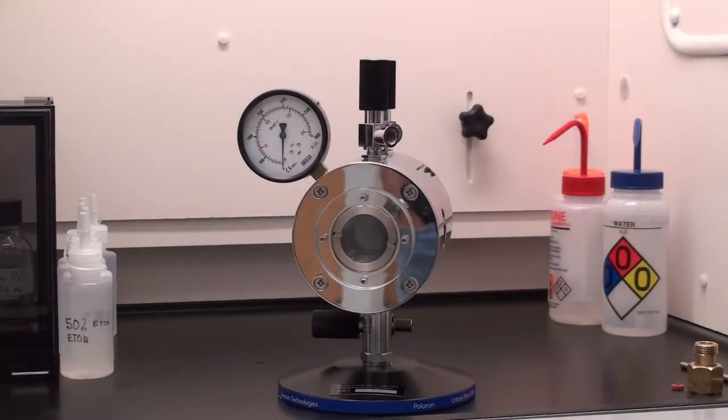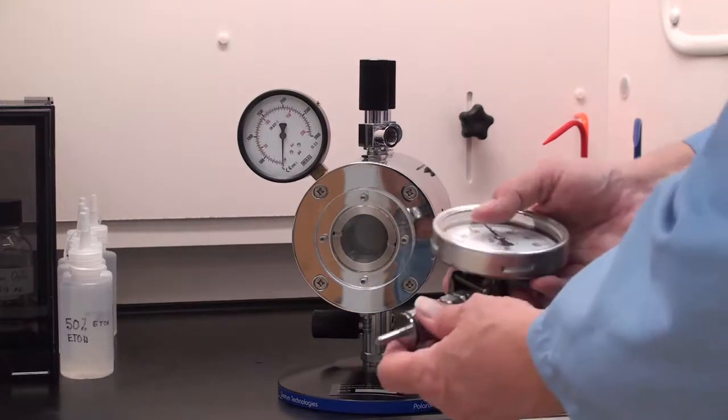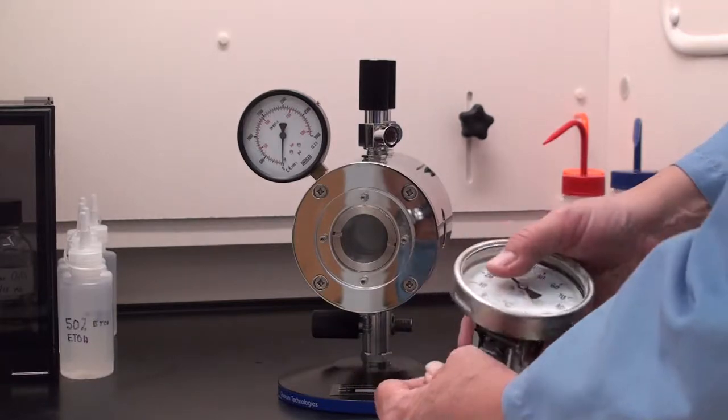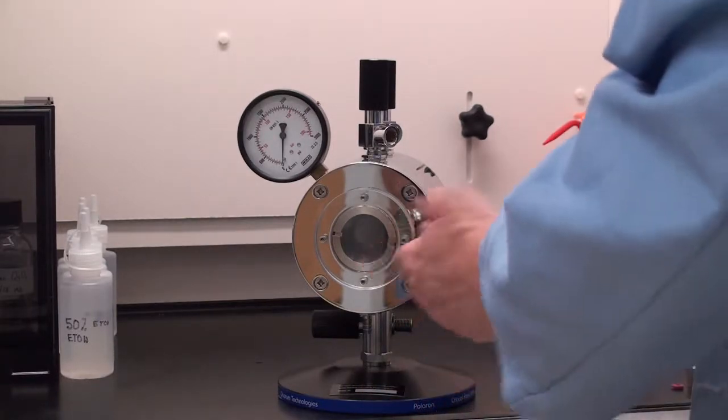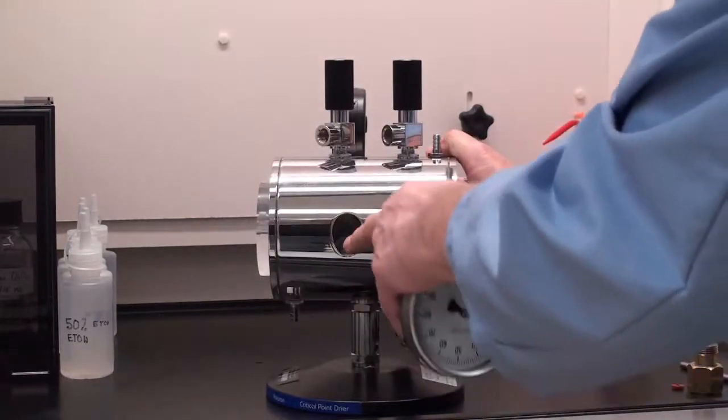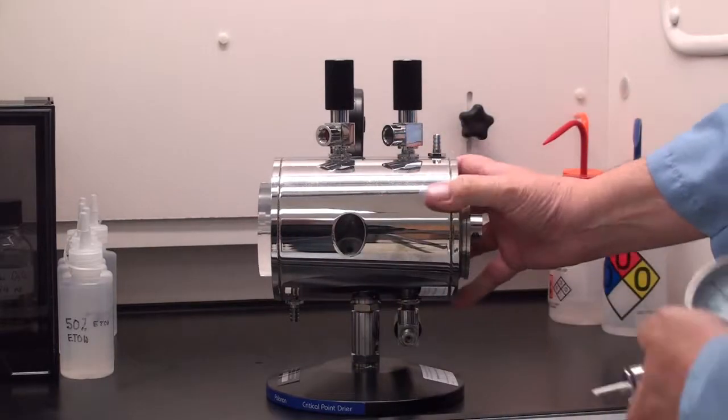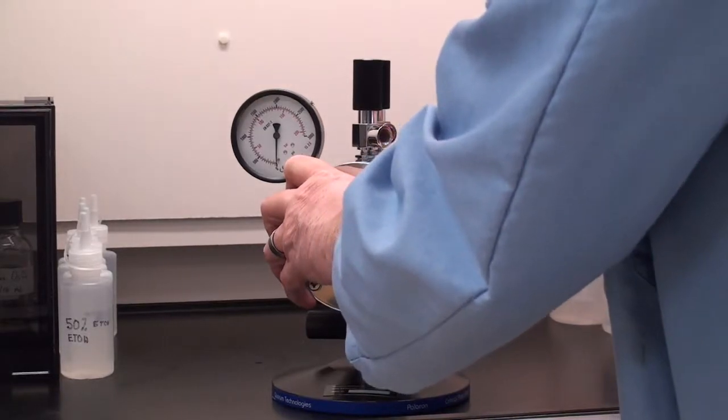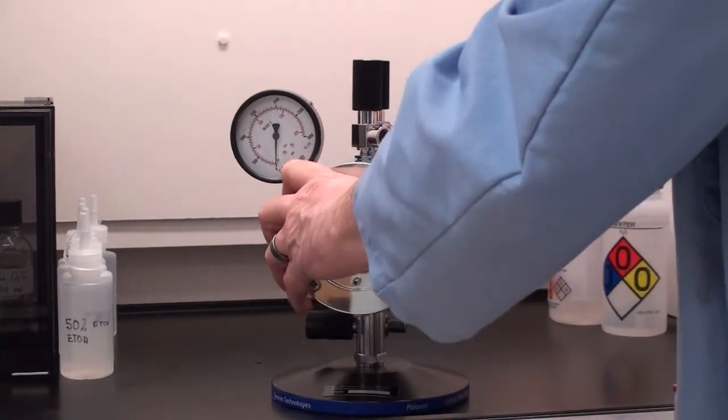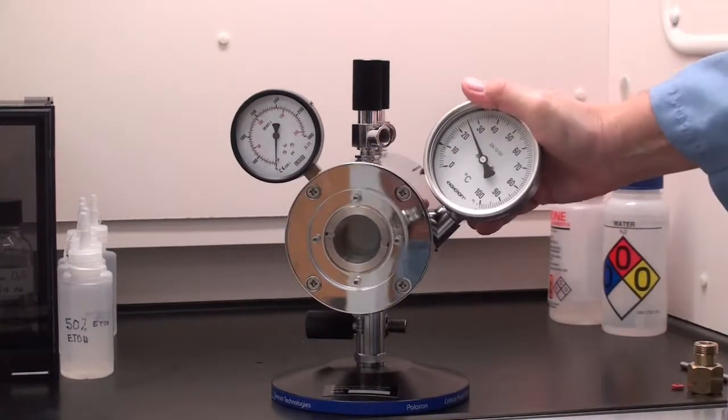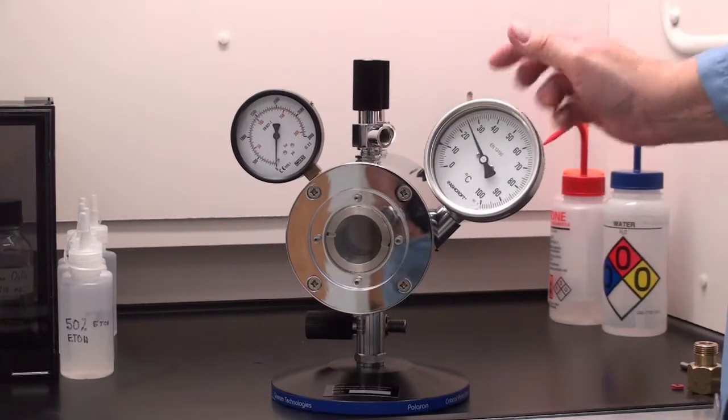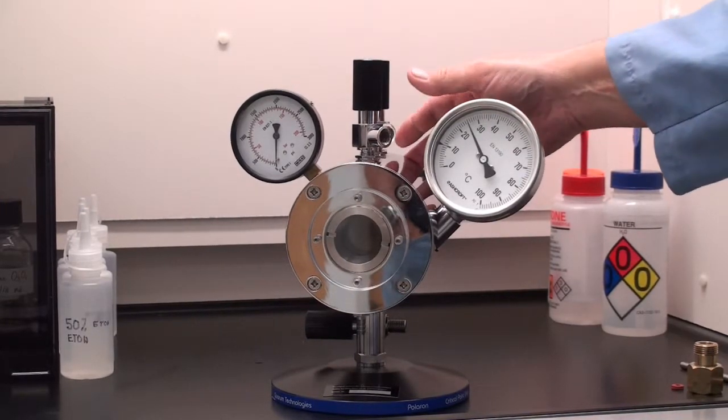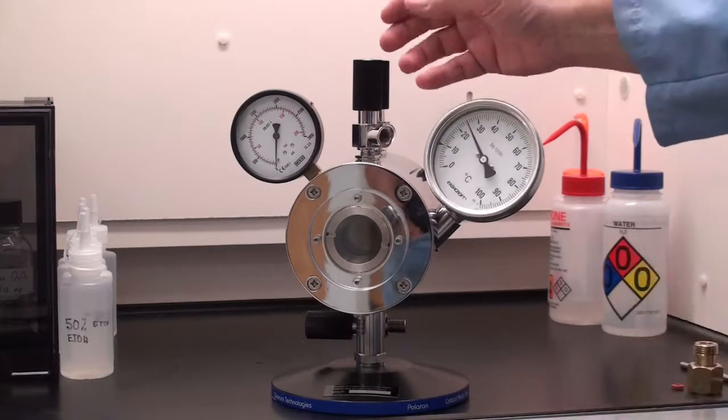All right, here we are at the E-3100. It's in a fume hood currently. I have the thermometer which we just saw on the setup, and that inserts into this orifice here and gets pushed all the way in as far as it will go. And then this can remain right in front where you can monitor it.